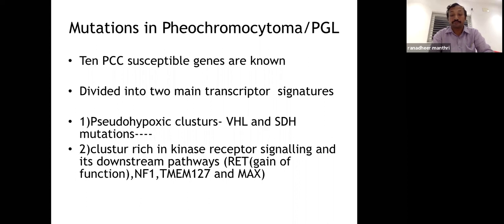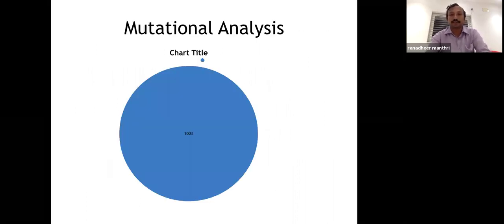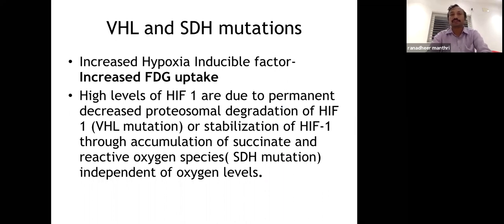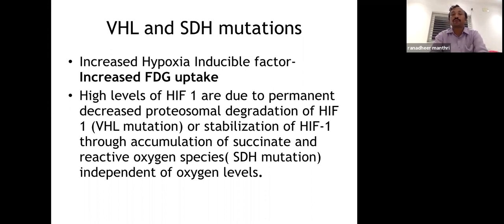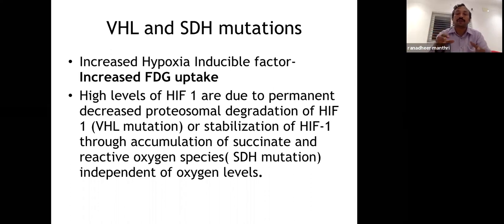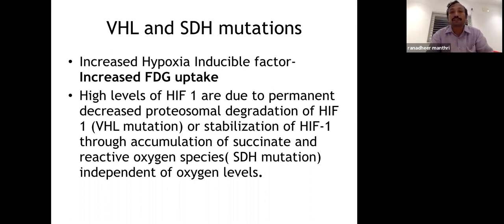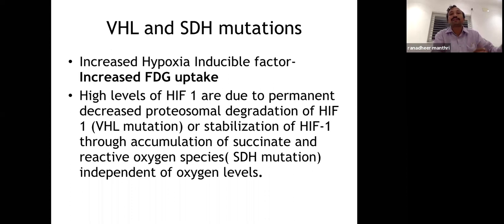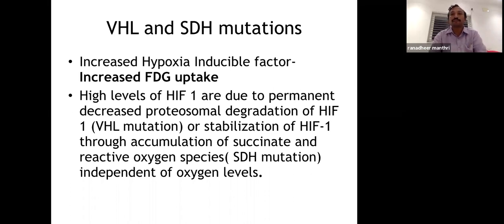In VHL mutation, normally VHL protein causes proteasomal degradation of HIF-1 (hypoxia-inducible factor). When VHL is mutated, HIF-1 degradation is lost, leading to high HIF-1 levels — creating pseudohypoxia. This increases FDG uptake. VHL syndrome is associated with renal cell carcinoma and other tumors. The increased HIF-1 drives the FDG avidity seen in VHL and SDH-mutant pheochromocytomas.